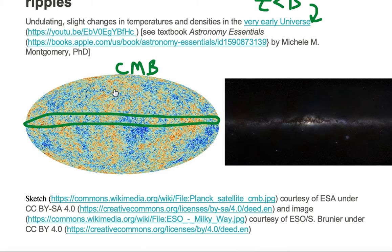The cosmic microwave background radiation has alternating colors of blues, greens, yellows, reds, and oranges. These colors almost look undulating. The cosmic microwave background radiation colors represent slight changes in temperature from average.